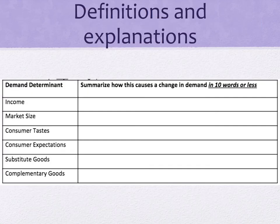The demand determinants are: income, market size, consumer tastes, consumer expectations, substitute goods, and complementary goods. Income means consumers get more or less money, which affects what they buy. Market size means consumers move into or away from an area — for example, a city hosting the Super Bowl gets a giant influx of people, drastically increasing market size and shifting demand right. Consumer tastes means consumers give or take status from a product based on how they feel about it in the present.